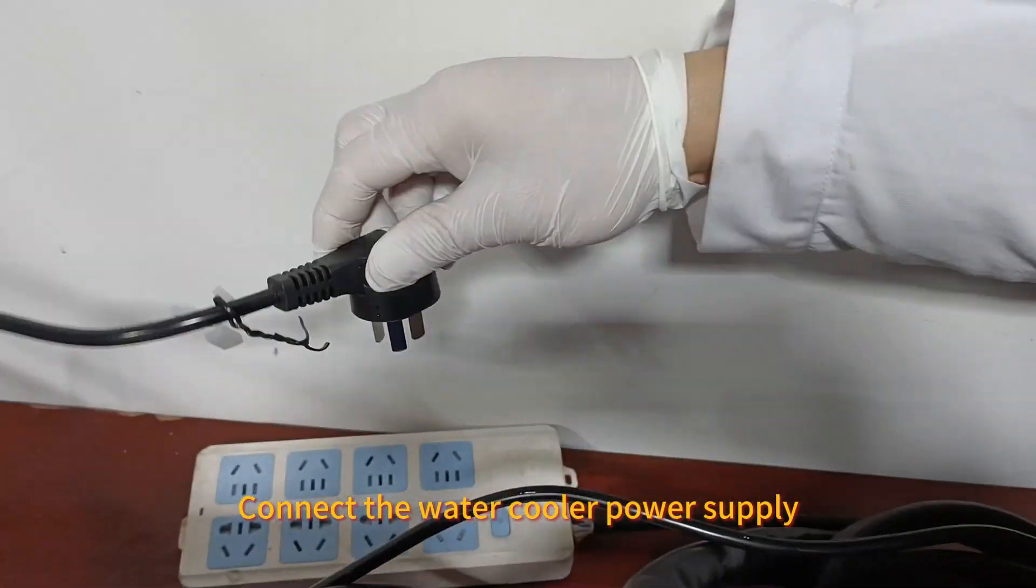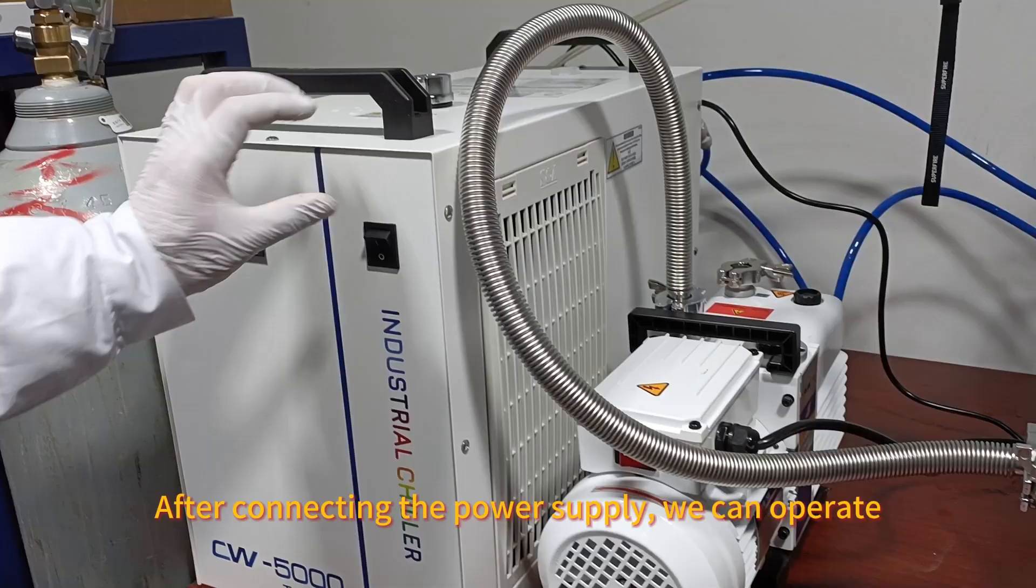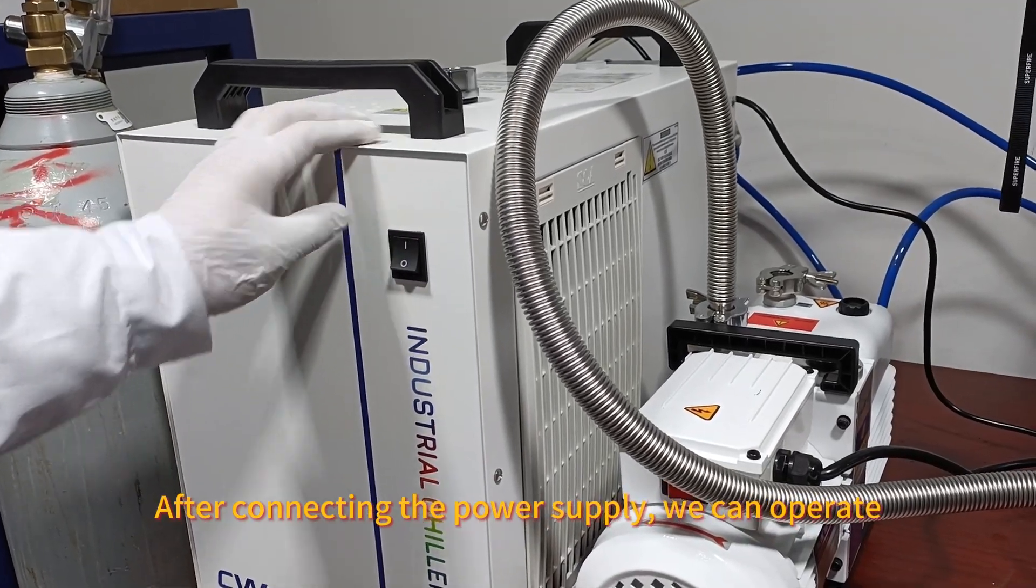Connect the water cooler power supply. Connect the power supply to the vacuum pump. After connecting the power supply, we can operate.